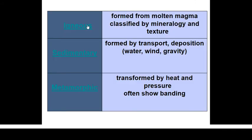Rocks are the major source of soils — the parent materials of all soils are rocks. Different rocks produce different types of soils after a complete process of weathering. The different types of rocks are: igneous, sedimentary, and metamorphic. Igneous rocks are formed from molten magma, classified by mineralogy and texture. Sedimentary rocks are formed by transport and deposition — transported by water, wind, and gravity. Metamorphic rocks are transformed by heat and pressure, and often show banding.